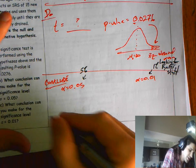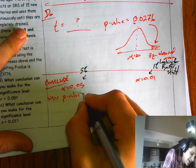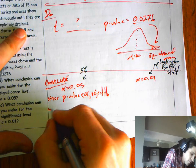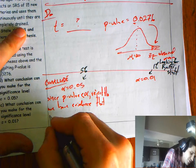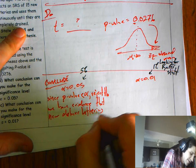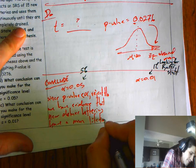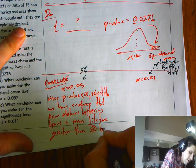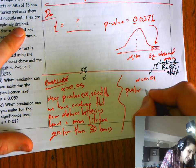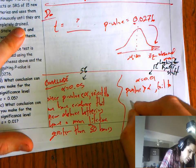If we set alpha to be 0.01, we're looking for rarer stuff. We need rarer stuff to be able to conclude. So at the alpha equals 0.05 level, we could say since p-value is less than alpha, we can reject the null. We have evidence that the new deluxe batteries have a mean lifetime greater than 30 hours.